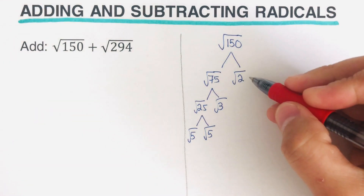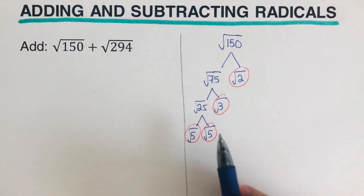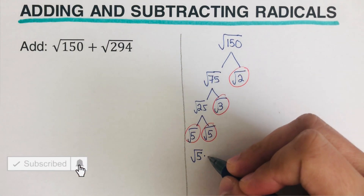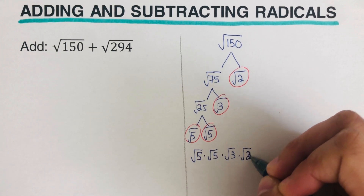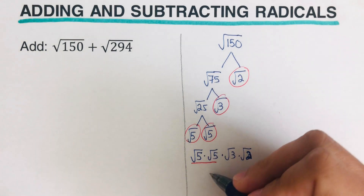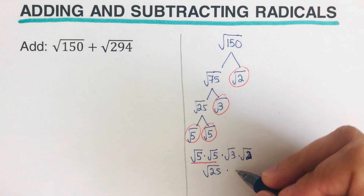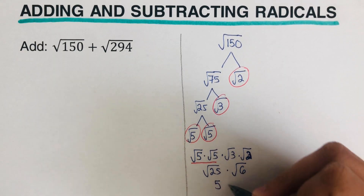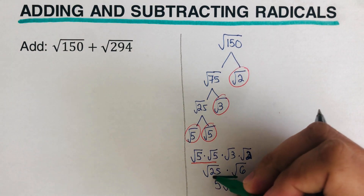So these are the leftovers. We're going to rewrite these numbers, starting with the ones that are doubles. So that would be square root of 5 times square root of 5, times square root of 3, times square root of 2. We pair them up: square root of 5 times square root of 5 is square root of 25, and square root of 3 times square root of 2 gives square root of 6. Square root of 25 is 5, so we write 5 square root of 6. This is the simplified version of the square root of 150.